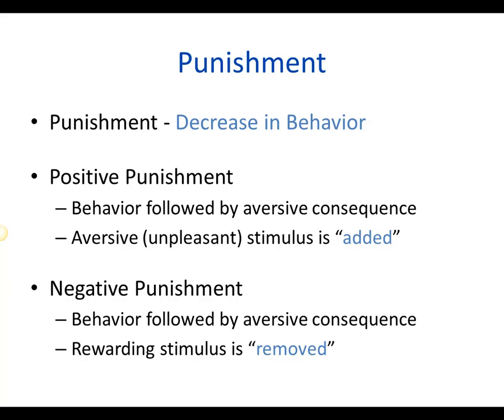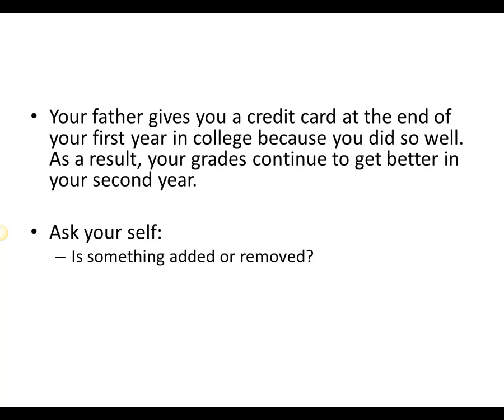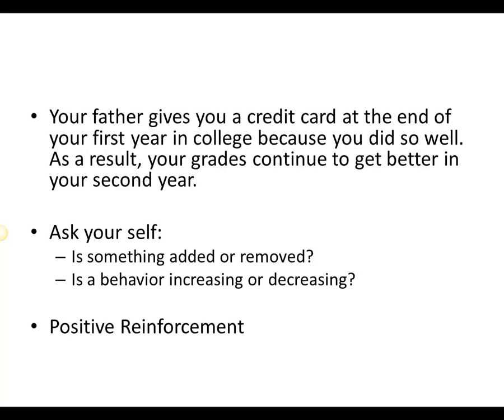Negative punishment is when a behavior is also followed by an adverse consequence, but in this case something we really want — something rewarding — is removed. Academic probation is a negative punishment: your academic freedoms are removed. Let's walk through an example: your father gives you a credit card at the end of your first year in college because you did so well, and as a result your grades continue to get better in your second year. Ask yourself: is something added or removed? Something's been added — the credit card — and the behavior is increasing. That's positive reinforcement.